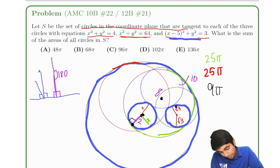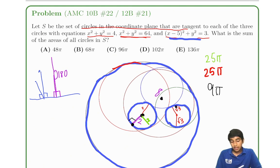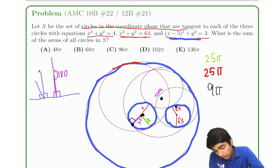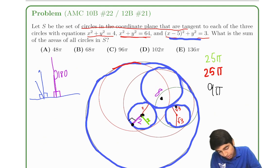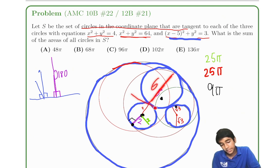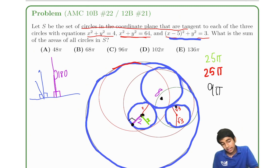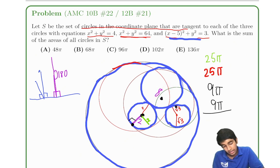Finally, the case where the circle is externally tangent to both of the smaller circles and internally tangent to the big circle. This is another blue circle. This part is 2, and the whole radius of the big circle is 8, so the diameter is again 6. By the same perpendicular collinearity reasoning, the area is 9π. So far we've got 25π + 25π + 9π + 9π = 68π.